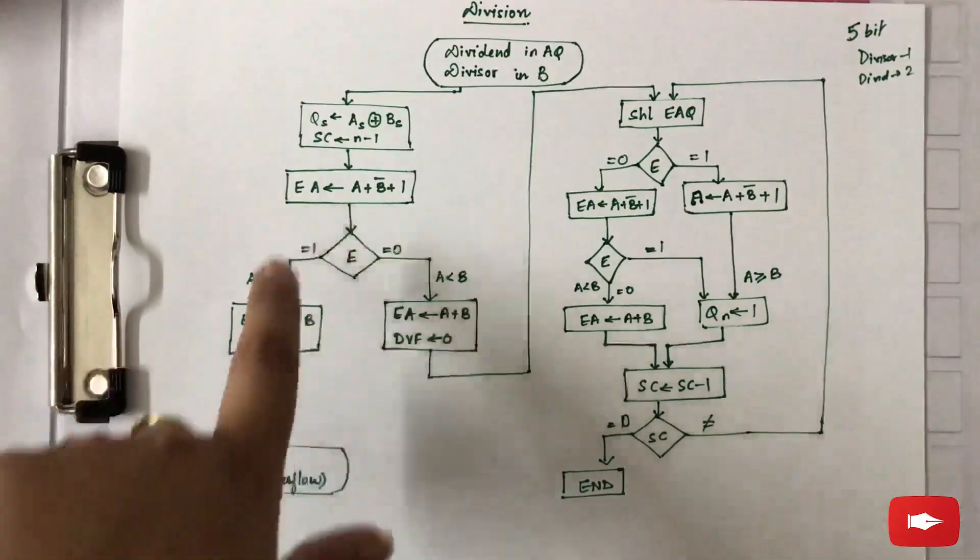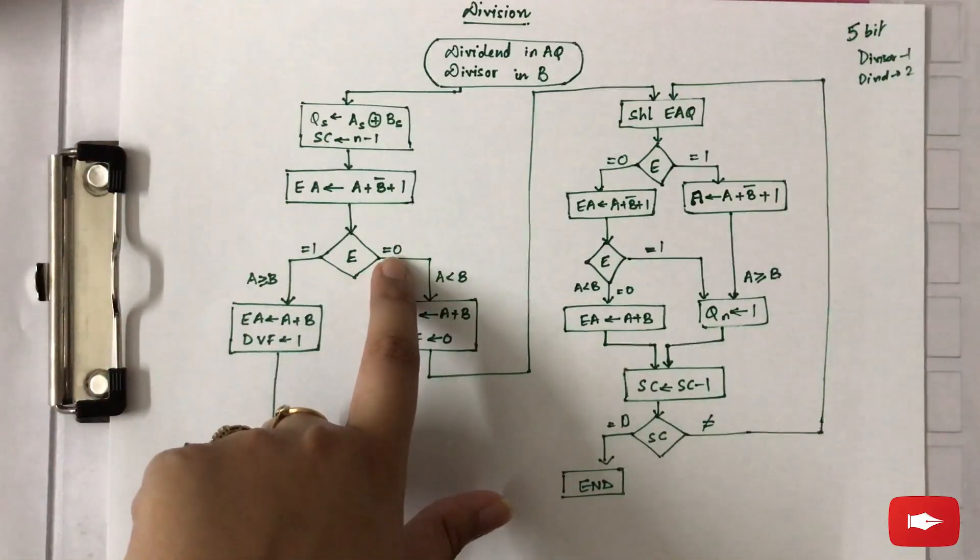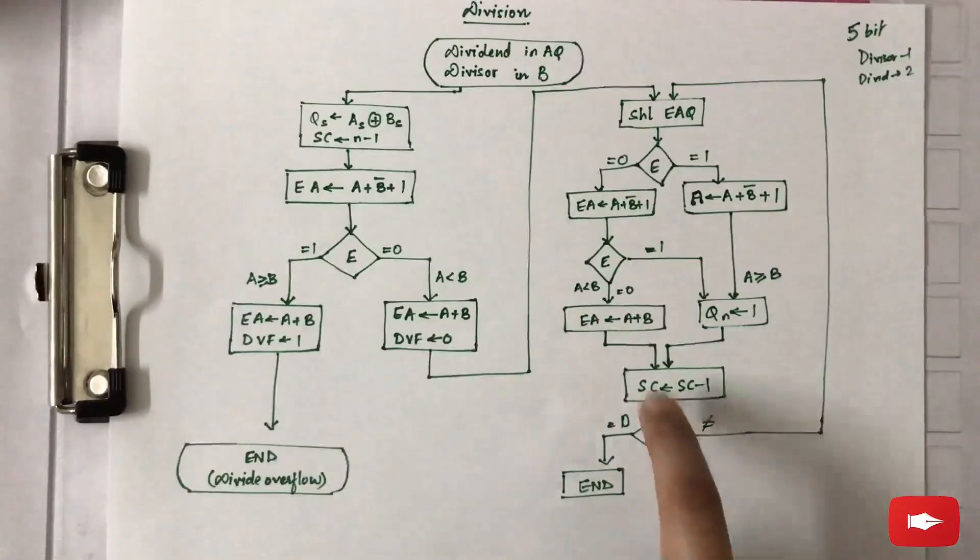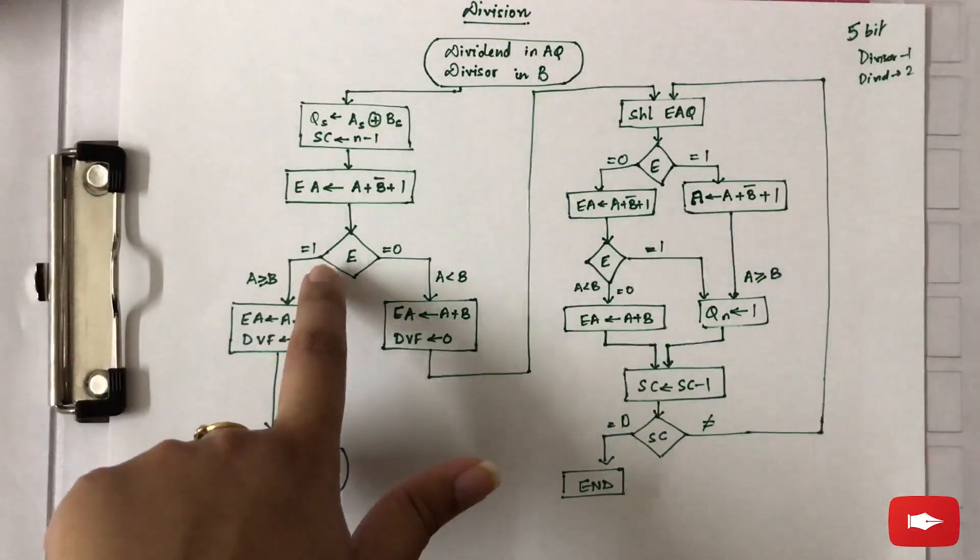If it is zero, that means there is no overflow and dividend's first bits are smaller than the divisor's bit, and the division process will continue. But in the other case where overflow condition occurs, that is the value of E is equal to 1, that means dividend is greater than divisor.